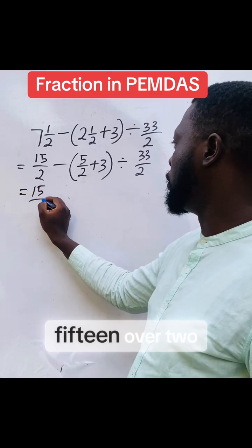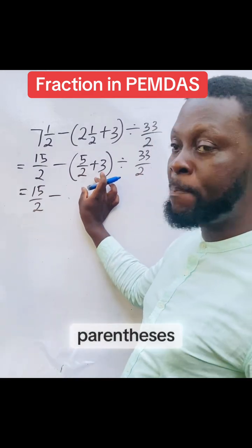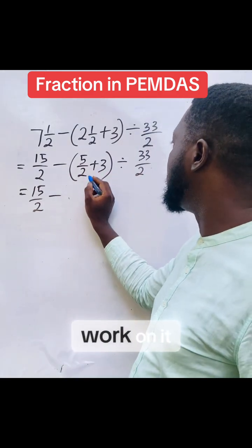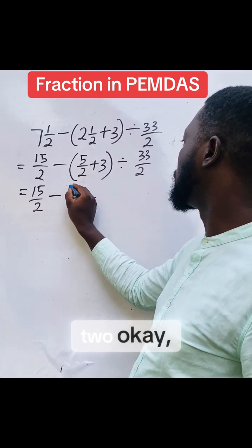So this is 15 over 2. So what you do now is work on the parenthesis, this bracket here. Work on it. So the LCM here is 2.